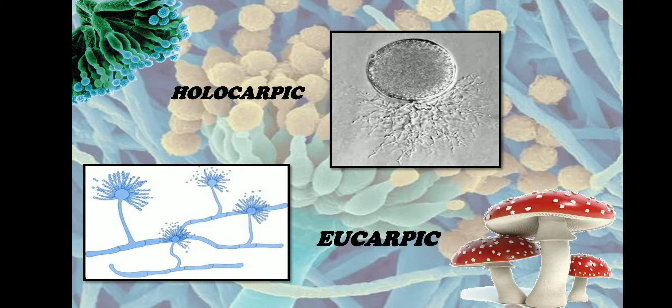In eukarpic thallus, vegetative cells and reproductive cells are seen at the same time. In most fungi, the thallus is differentiated into a vegetative part — which absorbs nutrients — and a reproductive part, which forms the reproductive structures of the fungi.